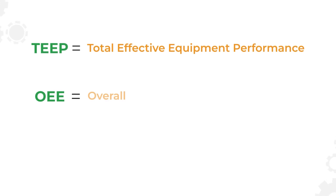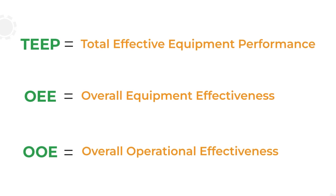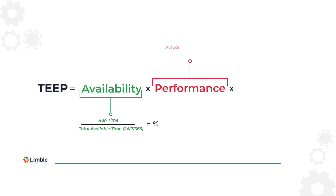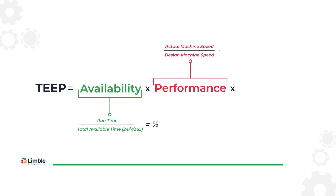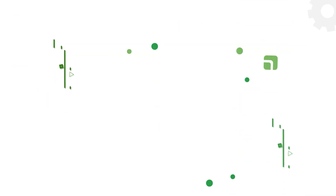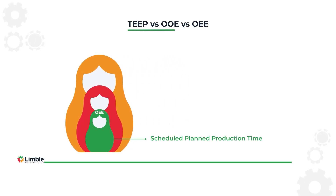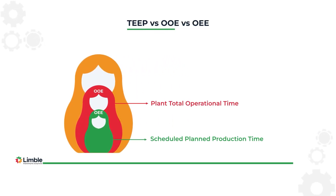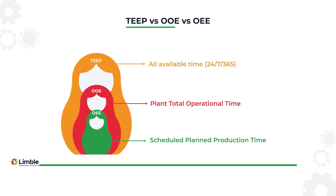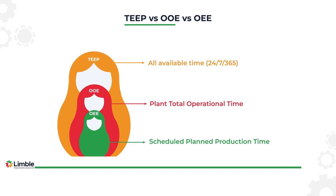TEAP, OEE (Overall Equipment Effectiveness), and OOE (Overall Operational Effectiveness) are three key metrics used to measure and improve manufacturing operations. All three are calculated using the same three factors of availability, performance, and quality. However, while OEE evaluates the effectiveness of existing equipment and OOE measures the effectiveness of existing operations, TEAP compares existing efficiency to what is possible if operations and equipment were at their most effective 24-7, 365.